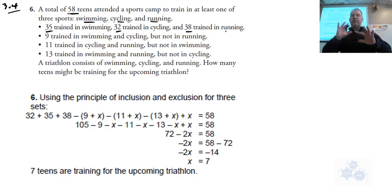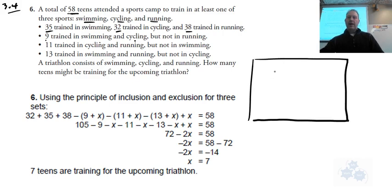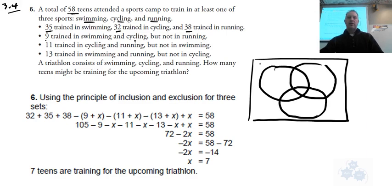So that would be the addition of all of the numbers inside the circles, not taking into consideration any that are double counted. That's just counting everybody, and sometimes you might be double counting or triple counting some. So nine trained in swimming and cycling but not running.